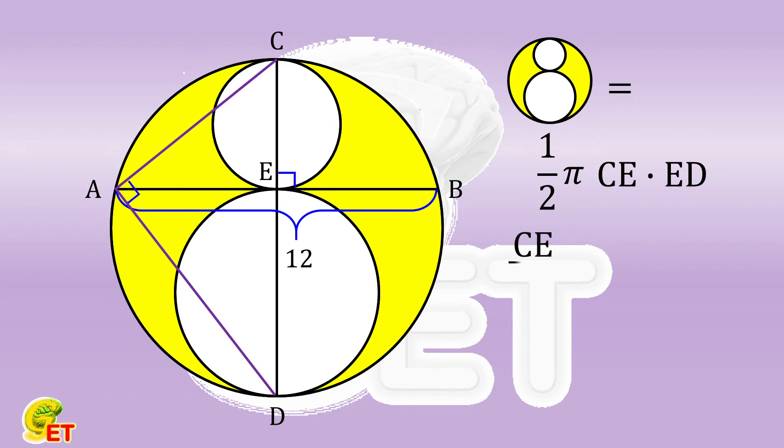Then CE over AE is equal to AE over ED. So CE times ED is equal to the square of AE.